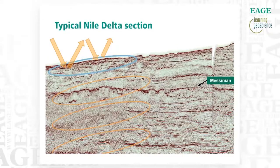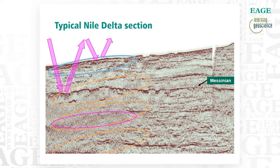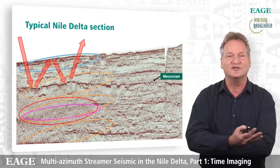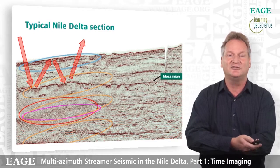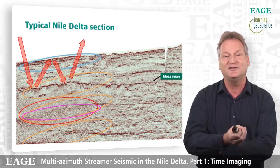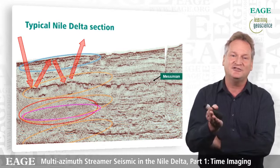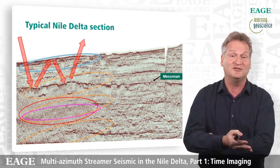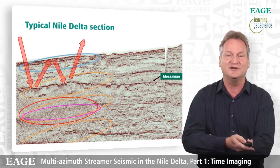Starting with multiples, that's the first big issue here. We see water bottom multiples coming in, and then we have multiples between the water bottom and the Messinian and the complexity of that. We also have interbed multiples as well — those are of lower amplitude but still causing general noise issues. The main issue to keep in mind is that as we go into deeper water, there's a lot of reflectivity right below the sea bottom, which causes these multiples to be three-dimensional and therefore very difficult to remove in processing.